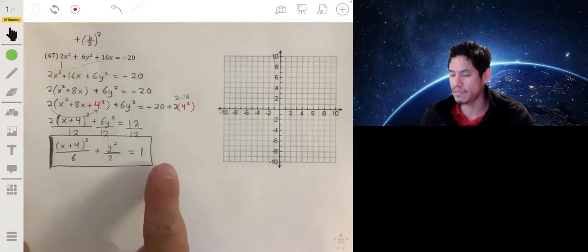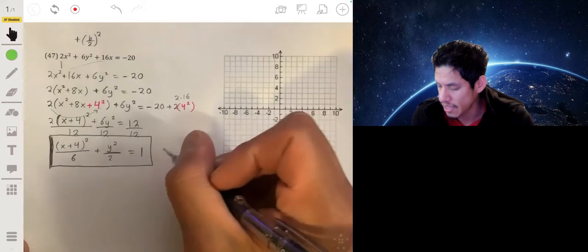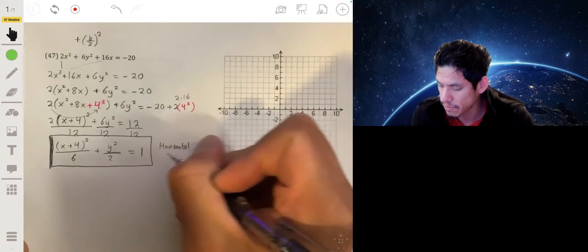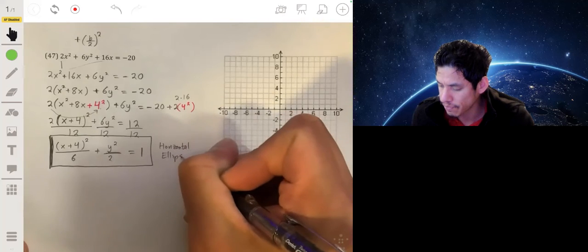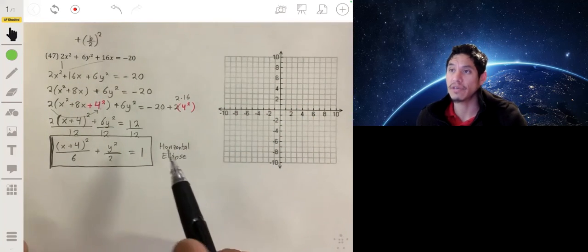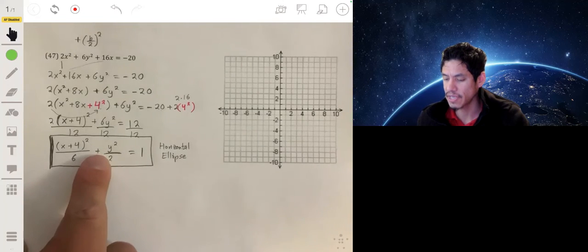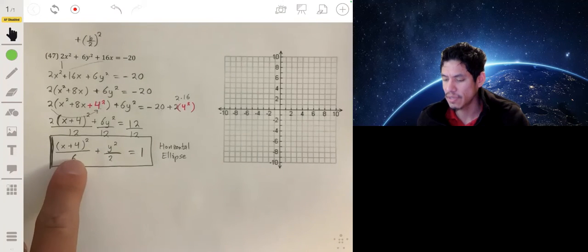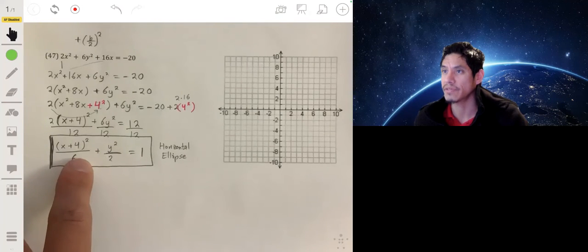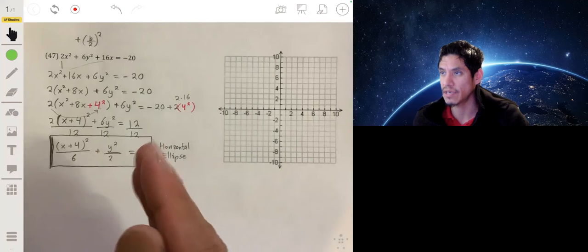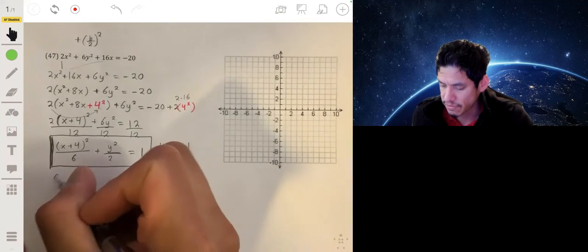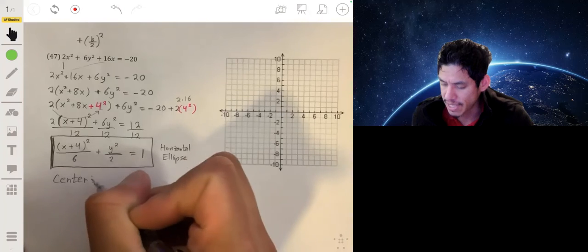Now this is my equation, and from here I can determine that this is going to be a horizontal ellipse. I figured out that it's a horizontal ellipse because first you're adding, you have a plus sign here, and the value under the x variable is bigger, so it's going to be wider than it is tall. Now you want to figure out where the center is.